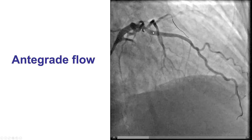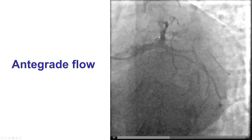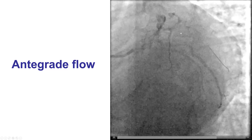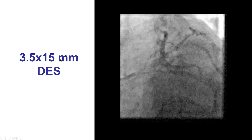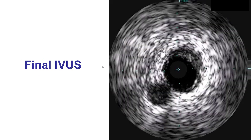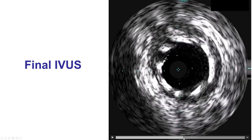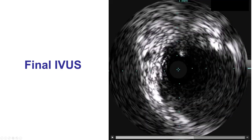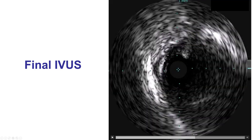After doing that, we were able to restore flow with balloon dilation. This is an early diagonal branch, as we had suspected. The vessel was pre-dilated again and TIMI flow was achieved. Then it was stented with a 3.5 by 15 mm drug-eluting stent that provided a nice result, confirmed with intravascular ultrasound showing that the stent is well expanded and covers the ostium of the vessel without, fortunately, going into the left anterior descending artery.